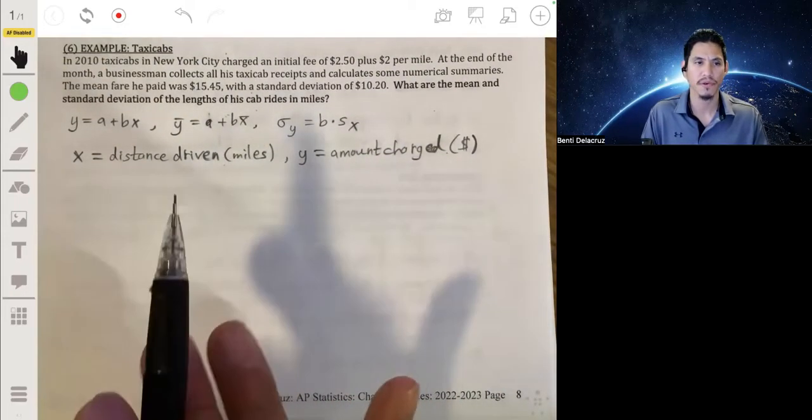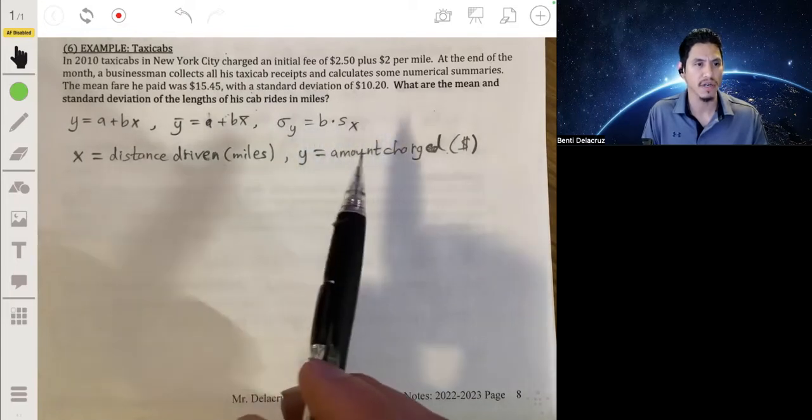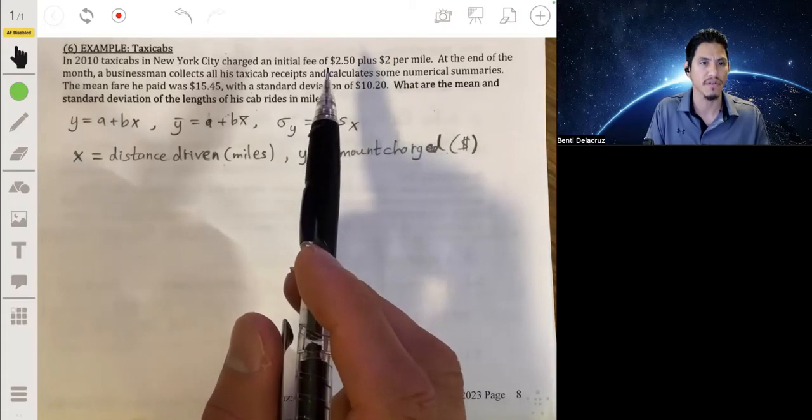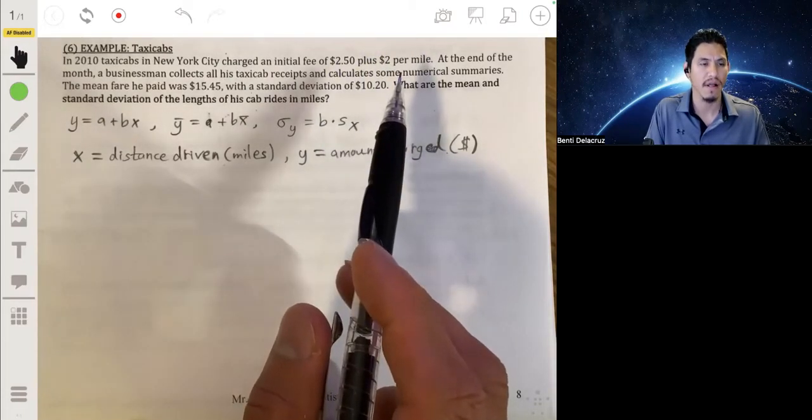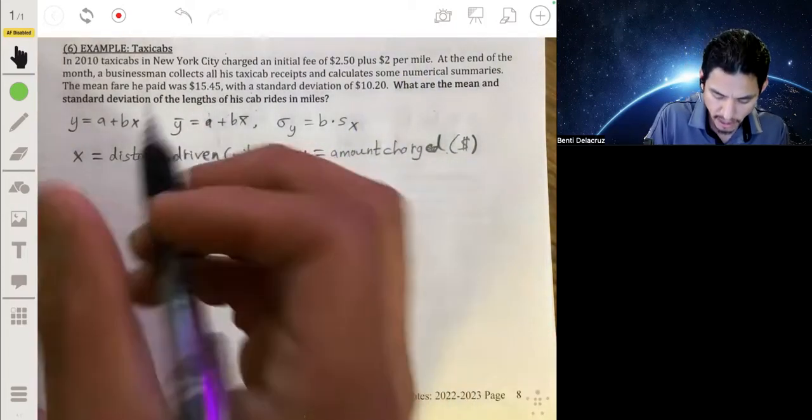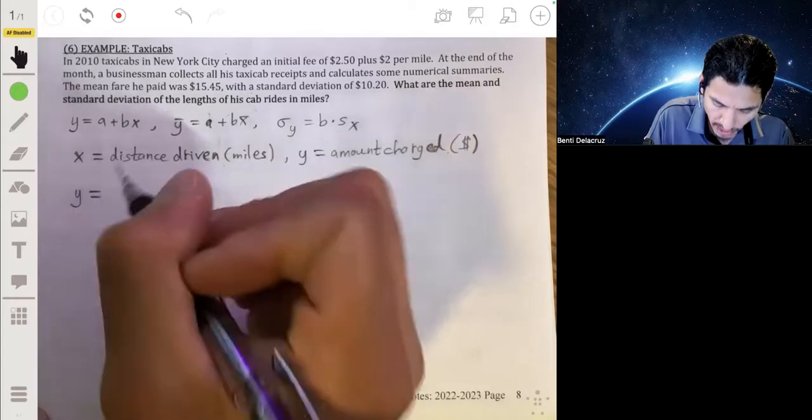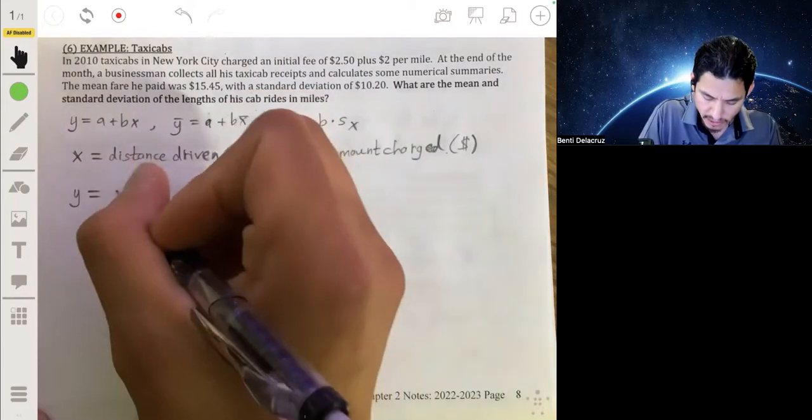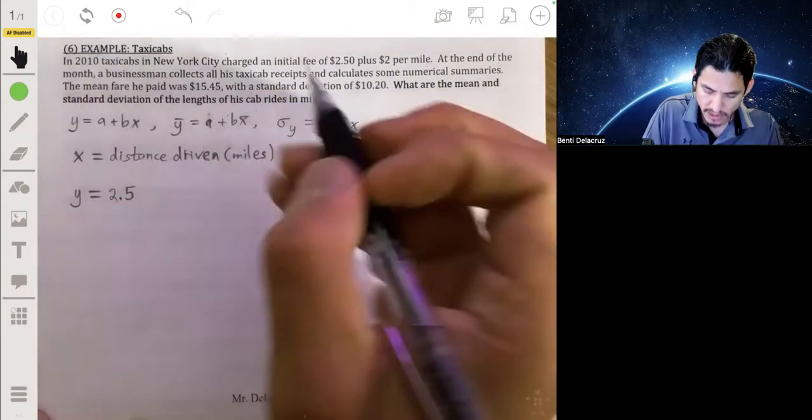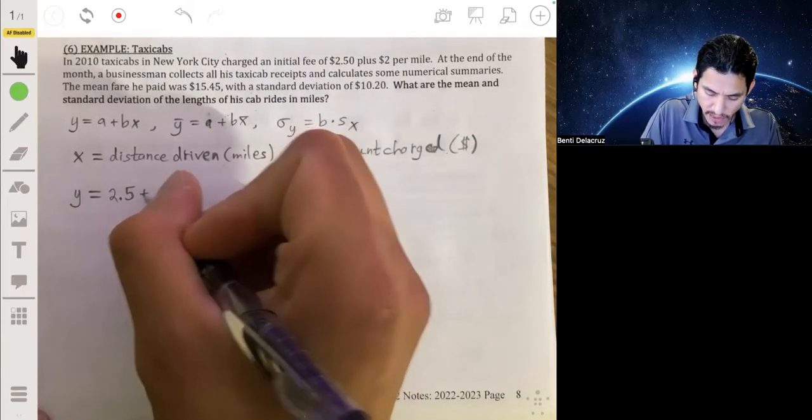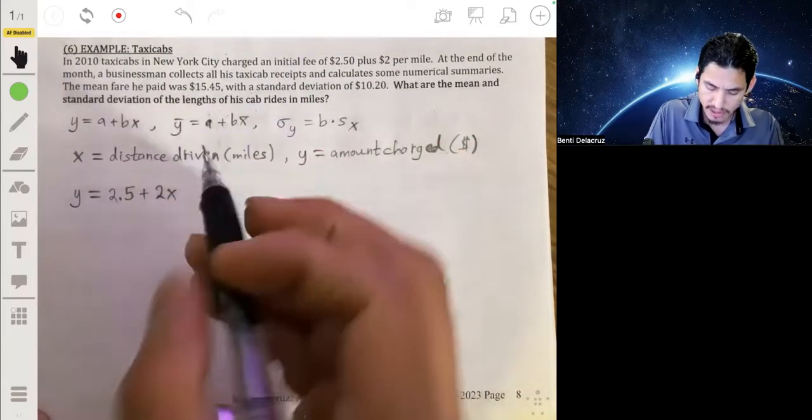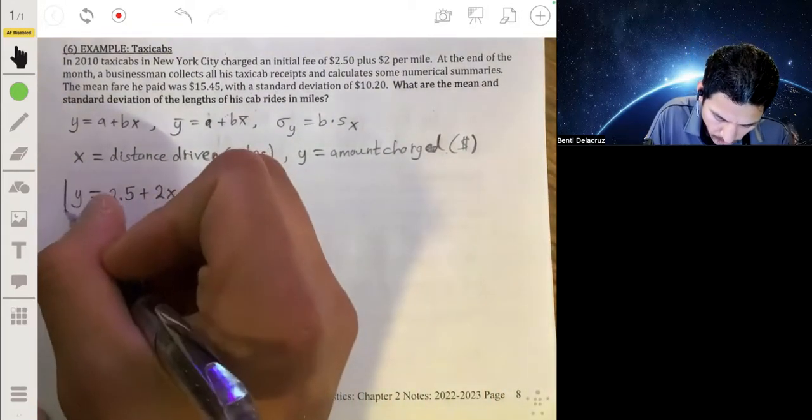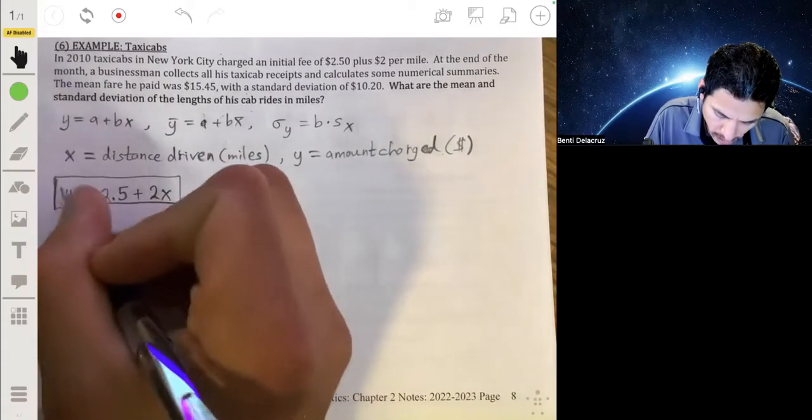So again, just use your common knowledge of the real world. How is the amount charged related to the distance driven? Well, let's look at the first sentence. It says that they charge an initial fee of $2.50 plus $2 per mile. So we can then say that the amount charged, y, is going to be equal to $2.50 or 2.5, that's the initial fee, plus 2 times the number of miles, which is going to be 2 times x, since x represents the distance driven in miles. So here's our equation for y in terms of x.